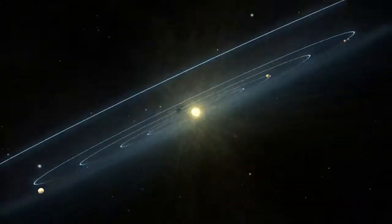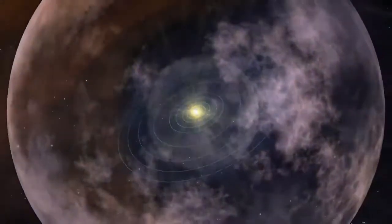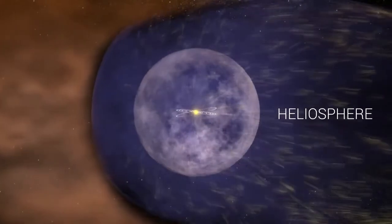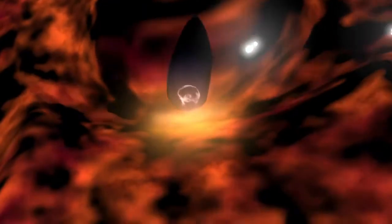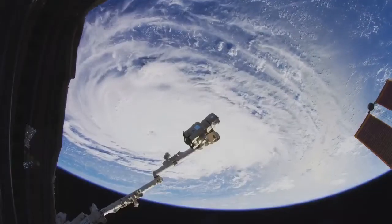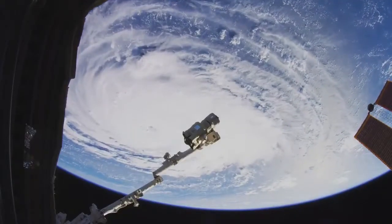The wind forms a giant protective bubble around our solar system, known as the heliosphere. This huge region surfs through the Milky Way, shielding us from interstellar radiation and creating an environment that helps life on Earth to flourish.